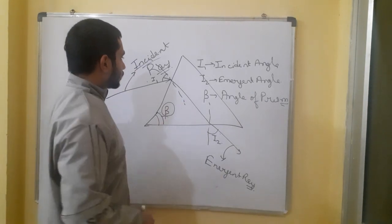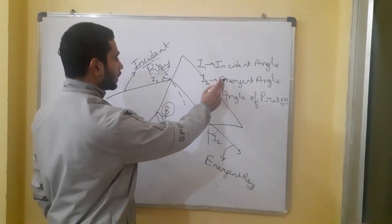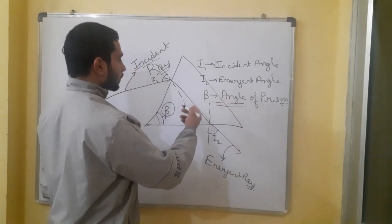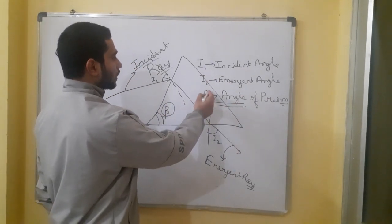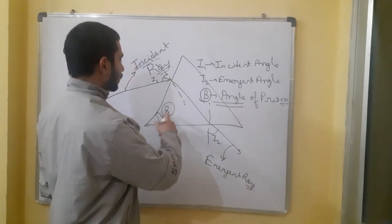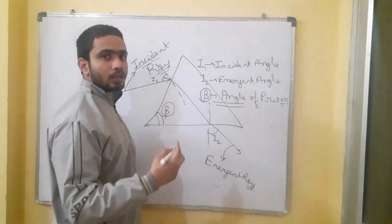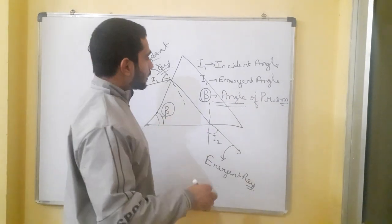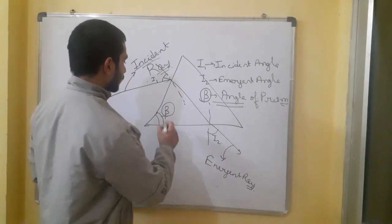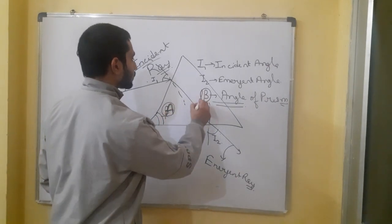To summarize the key terms: incident ray, incident angle, emergent ray, emergent angle, and angle of prism. Beta is the angle of prism — sometimes written as A. These are the things we have to remember for solving questions.